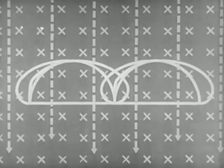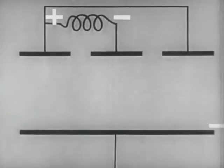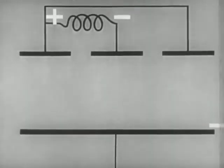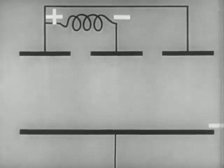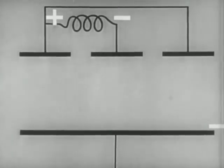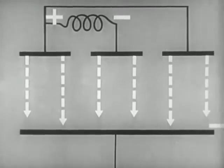Now let's apply this knowledge to the operation of a magnetron. Consider a magnetron oscillator composed of a continuous plane cathode and an anode of several segments. Alternate sections of the anode are connected to opposite sides of the tank circuit. If this is a CW magnetron oscillator, there will exist between the cathode and the anode a steady DC potential.